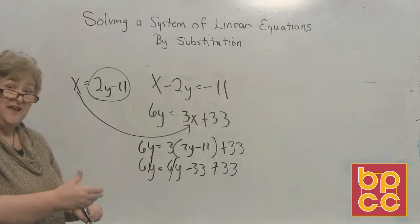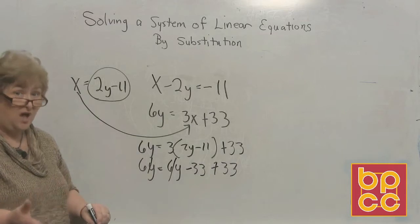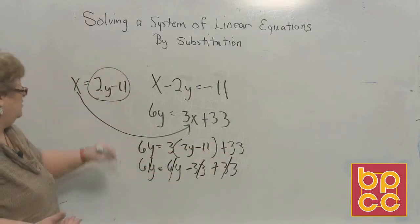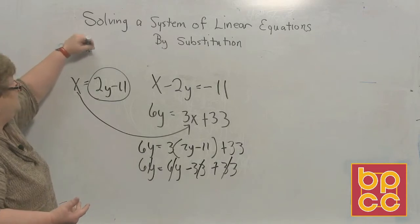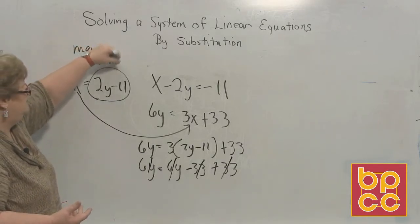The 33, positive and negative, are on the very same side. Same side, different signs will also clear out. So, when all is clear, we're going to say dependent, many solutions.